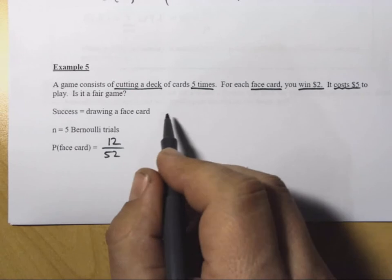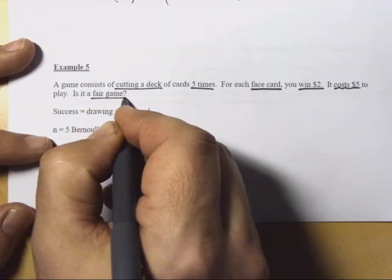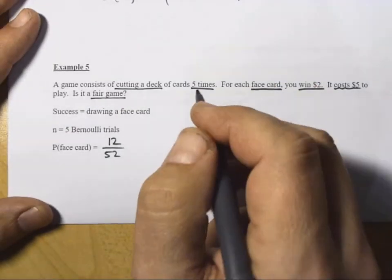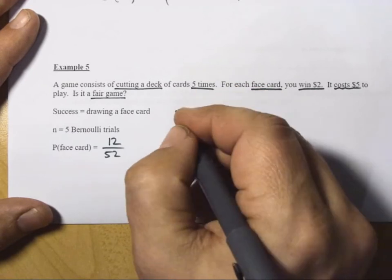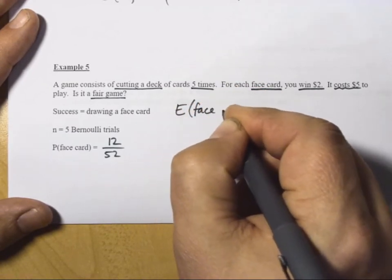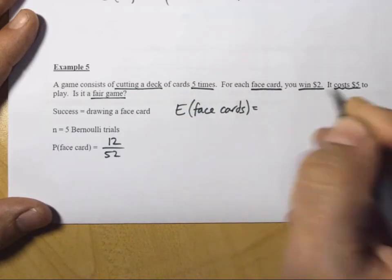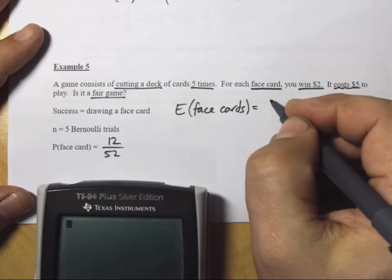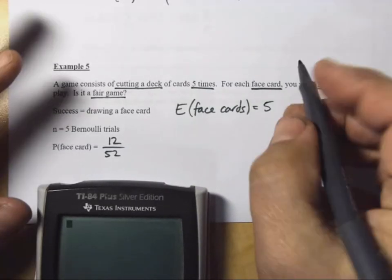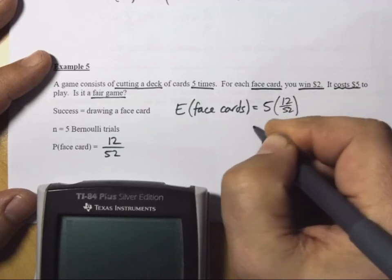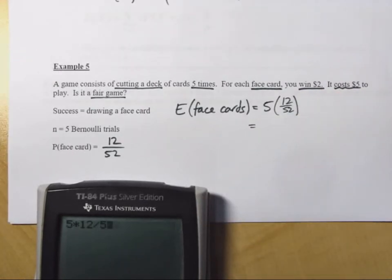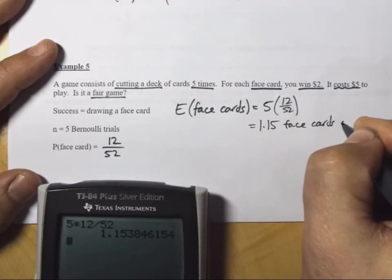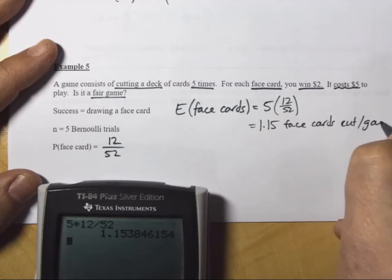Well, what we should probably find out here is not the probability. We want to know whether this is a fair game or prove whether it's a fair game or not. So, in order to prove that, we want to find the expected values. Here is the expected number of face cards in each game that we play. If we have a 12 in 52 chance of getting a face card and there are 5 cuts we're allowed to do, 5 times 12 in 52 is equal to 1.15 face cards cut per game on average.